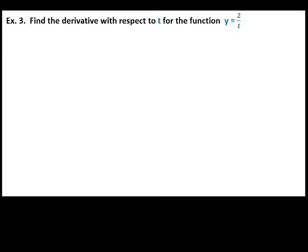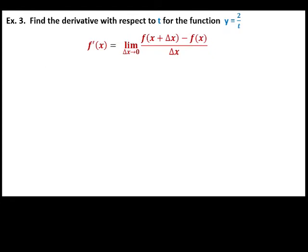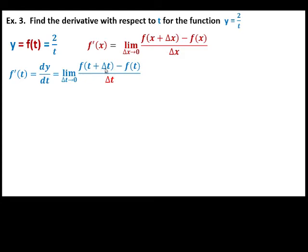Next example: find the derivative with respect to t of the function y equals 2 over t. Starting again with the definition of the derivative. Our function y is a function of t equals 2 over t. So, f prime of t equals dy/dt — another notation for derivative. Replace t with t plus delta t.